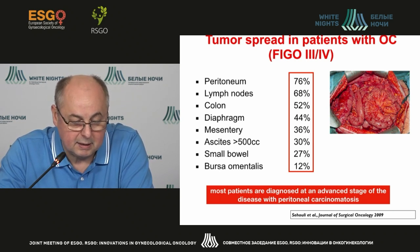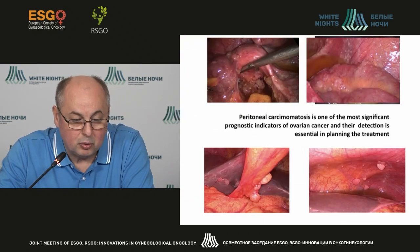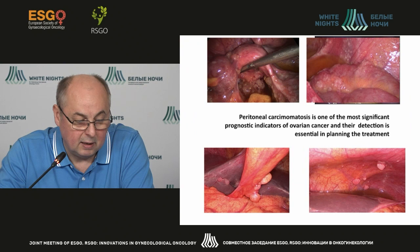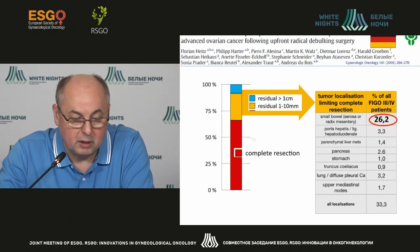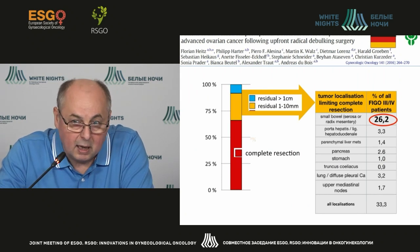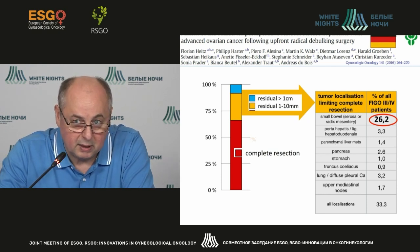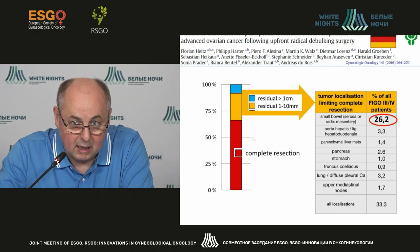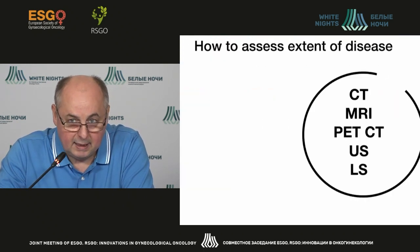There are small bowels and retroperitoneal localization of the disease that defines the resectability of the disease. Peritoneal carcinomatosis is one of the most significant prognostic factors in case of the choice of the surgical treatment and possibility of debulking surgery. If we look at the data that are published now, approximately 25 percent of female patients are those in case of which it's impossible to do debulking, and it's due to the localization of the visceral signs of the disease.